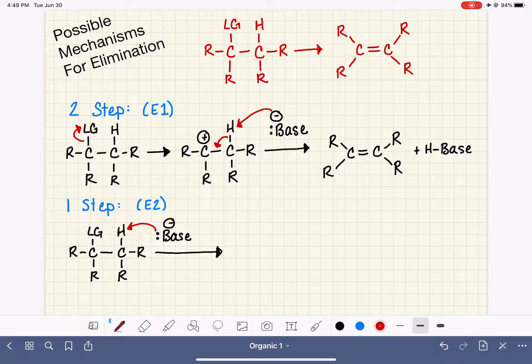The base is going to start this off by attacking and grabbing that hydrogen from the important carbon, which will cause a chain reaction. The carbon-hydrogen bonding electrons will move down. They have nowhere else to go. They will move down to form the carbon-carbon double bond that we see in our product. And for that carbon-carbon double bond to be possible for this particular carbon,